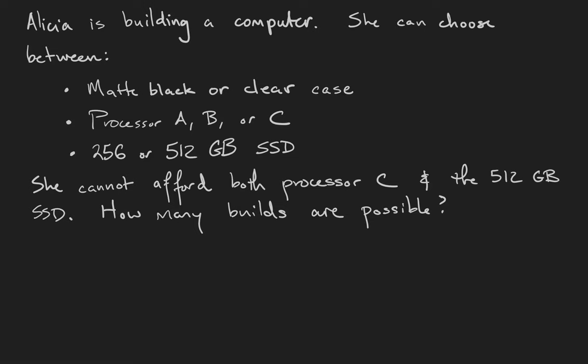Alicia is building a computer. She can choose between a matte black or a clear case, processor A, B, or C, and a 256 or 512 gigabyte solid state drive. Parts are expensive, so she cannot afford both the processor C and the 512 gigabyte solid state drive. Therefore, how many builds of her computer are possible?